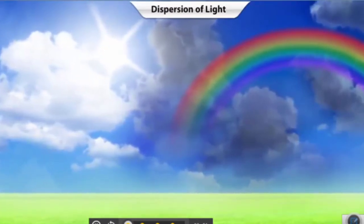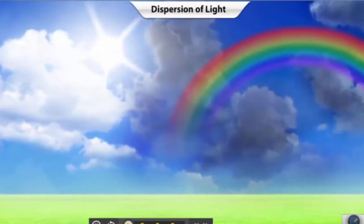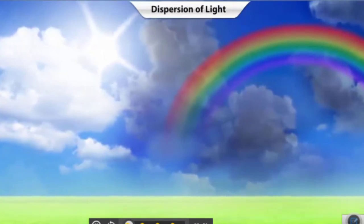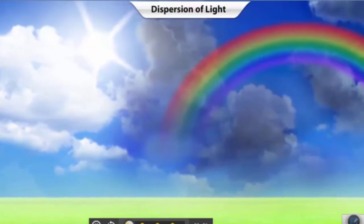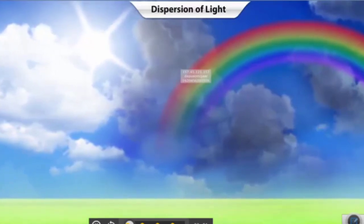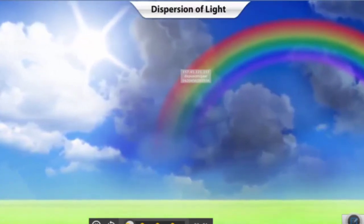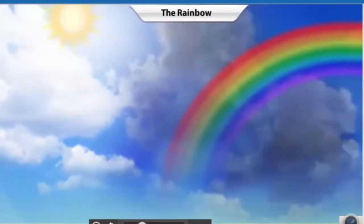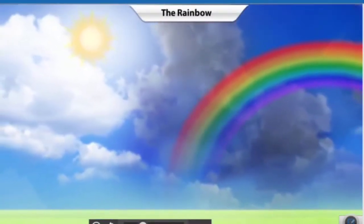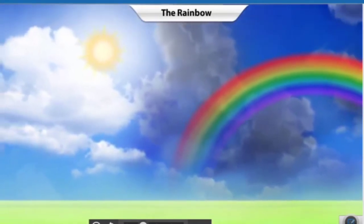Have you ever wondered why you see a rainbow in the sky just after a rain? Where do these vibrant colors come from? Well, this can be explained by the phenomenon of dispersion of light. Now that you know how light splits up into different colors, let's find out how a rainbow is created.